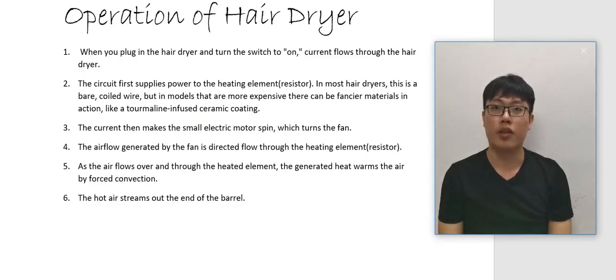Now I'm going to talk about the operation of the hair dryer. First, when you plug in the hair dryer and turn the switch on, current flows through the hair dryer. The circuit first supplies power to the heating element, which is a resistor. In most hair dryers there is a bare coil wire, but in models that are more expensive there can be a ceramic material.